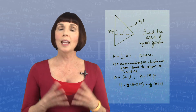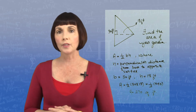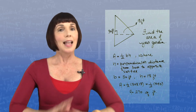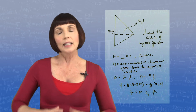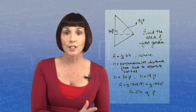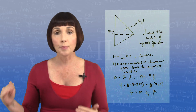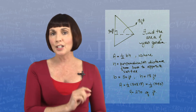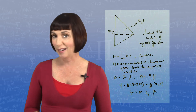So the area of our garden is 270 square feet. Remember, any side can be the base, and the height is just the perpendicular distance from whatever side you're calling the base to the opposite vertex. So don't let the orientation of the diagram throw you, like this one might have.